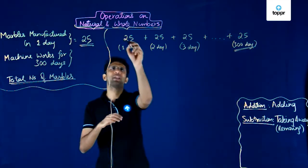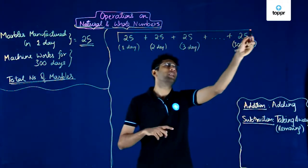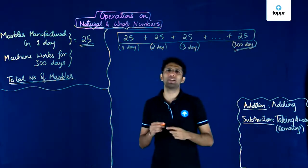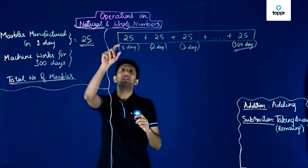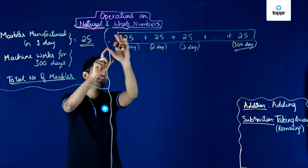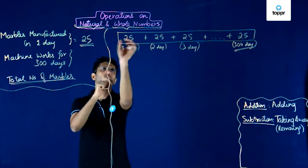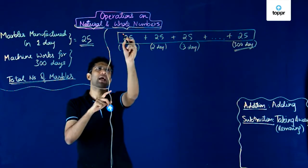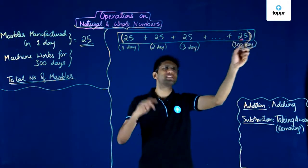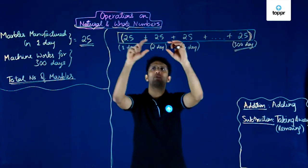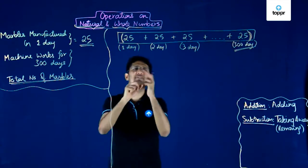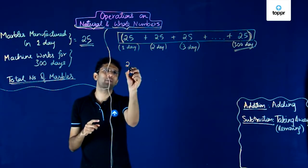But note that this operation can be performed in a more intelligent manner. If we write the same expression and take 25 out of each of these terms — I am taking 25 out and placing a bracket — this is the count of the total number of marbles. Note that each of these numbers is 25, and so I can take 25 common out of the bracket.